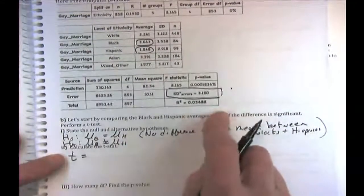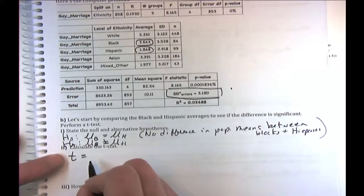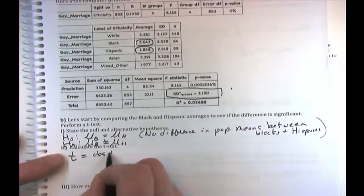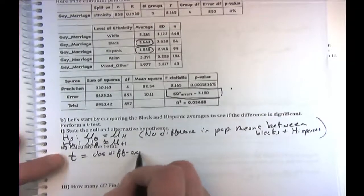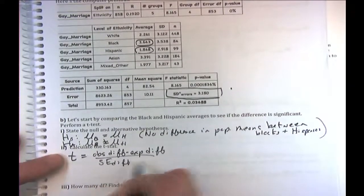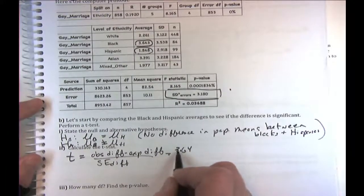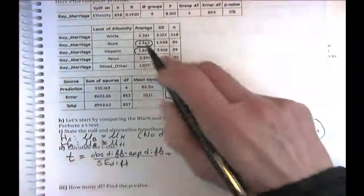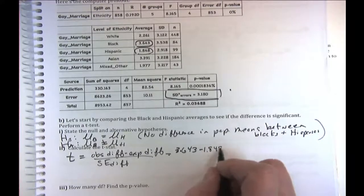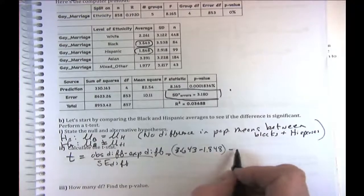The standard error of 0.4717 came from: 3.18 times the square root of 1 over 84 plus 1 over 99, where 3.18 is the pooled SD-plus. The difference of 1.795 is simply 3.643 minus 1.848. That's how we got our T statistic of 3.804.